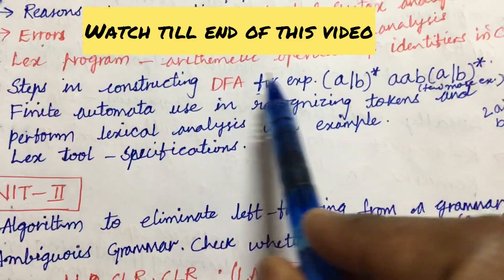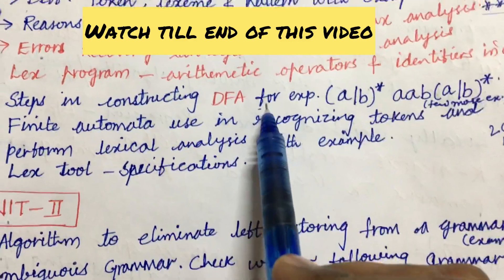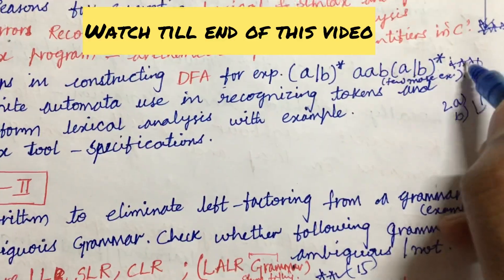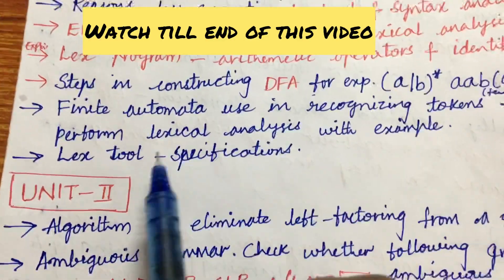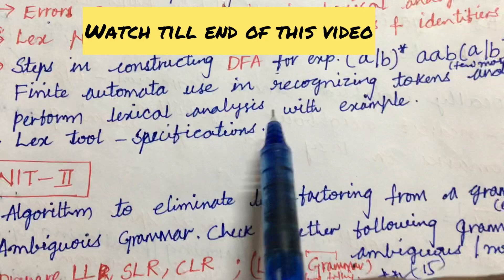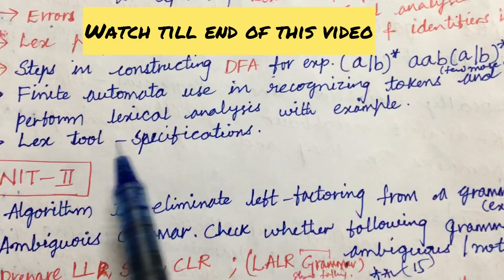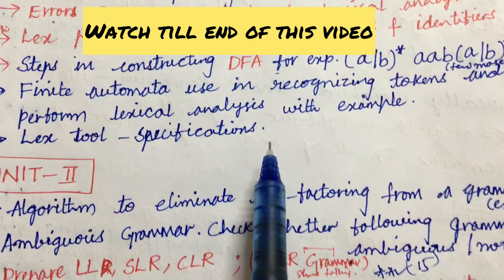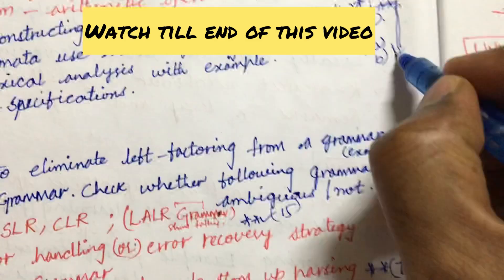There are several questions asked in the previous year question paper, and we can expect this also as one of the gunshot questions related to DFA. Later, finite automata use in recognizing tokens and perform lexical analysis with example, as well as lex tool and its specifications.